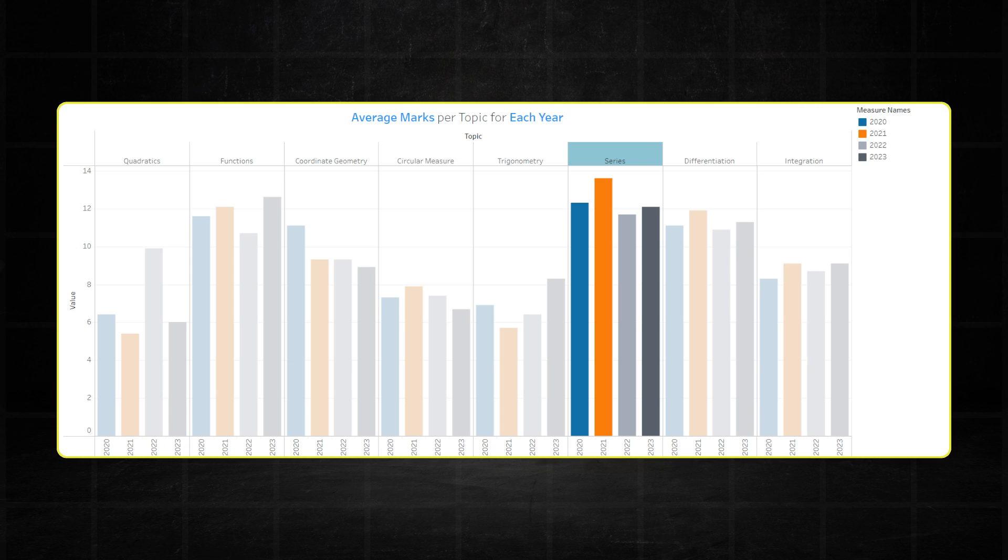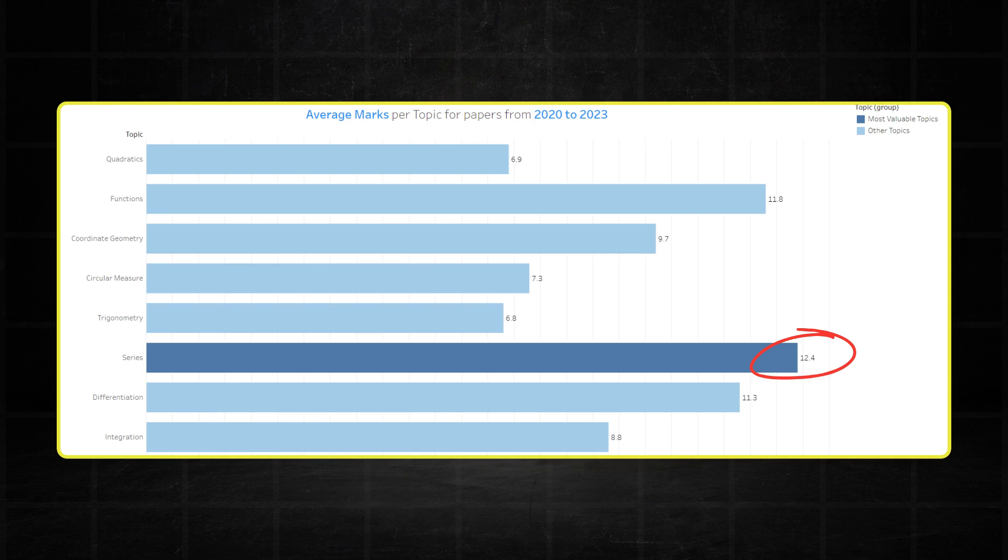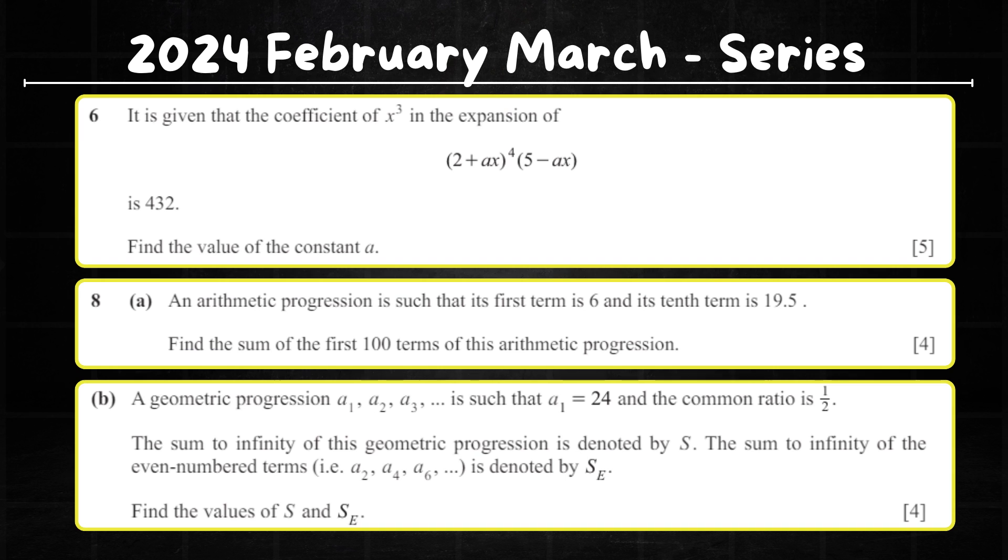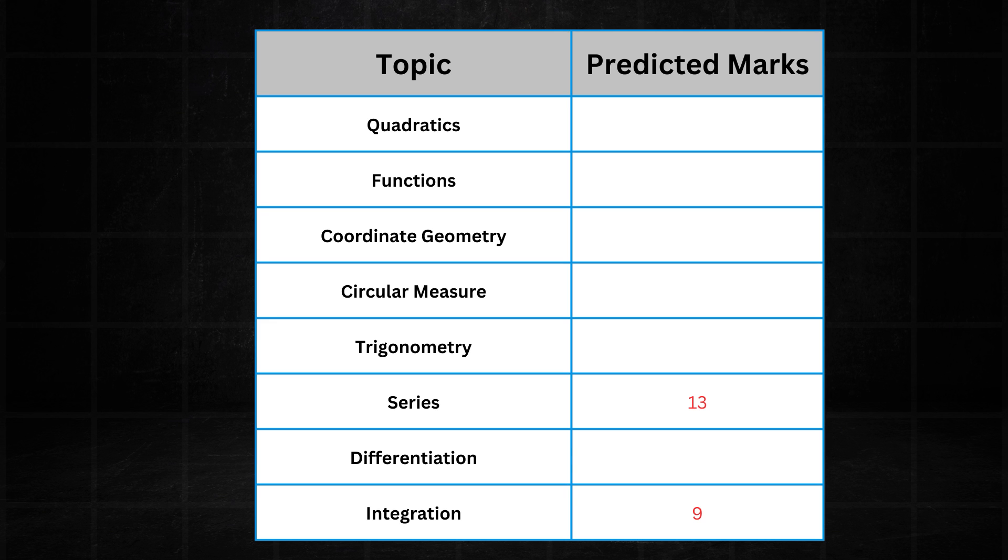Series is probably one of the more consistent high performers. It recorded 13 marks which is pretty much around its average of 12 marks per paper. It had the binomial expansion, AP and GP questions as usual. And I'd expect nothing less in the May, June series. So I'll predict a showing of about 13 marks.